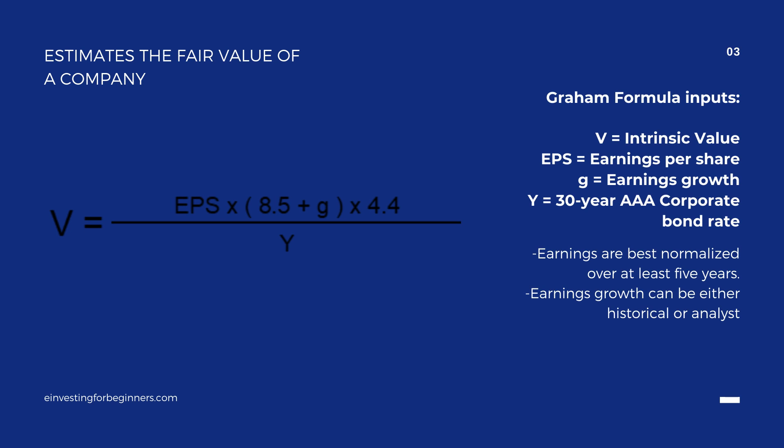The Graham formula: V equals EPS times (8.5 plus G) times 4.4, divided by Y. Where V equals the intrinsic value, EPS equals earnings per share, G equals earnings growth, and Y equals the 30-year AAA corporate bond rate. Earnings are best normalized over at least 5 years, and earnings growth can be either historical or an analyst estimate.